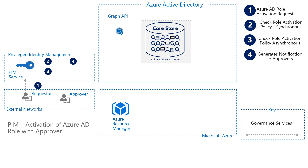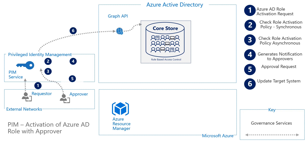Some time goes by, and then the approver can either approve or decline in step five. This can be done by clicking on the link in the email or within the portal. When this is done successfully in step six, the Azure target system is updated. Lastly, in step seven, the logs are captured and notifications are sent out.